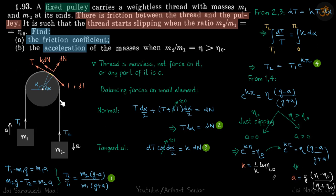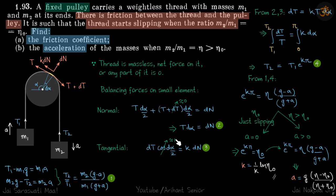In the tangential direction, forces are also balanced. We write: dt times cos(d-alpha by 2) equals k times dn. The t and t components cancel, leaving only dt. Since d-alpha is very small, cos(d-alpha by 2) is approximately 1. So now we have our three equations.